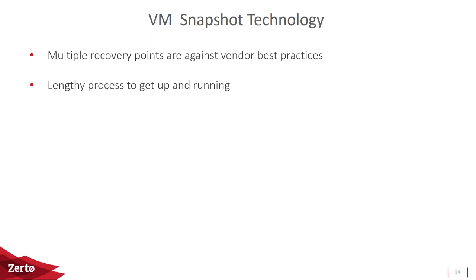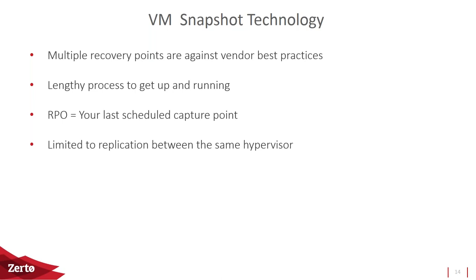VM snapshot solutions can be a lengthy process to configure and maintain — coordinating versions, keeping everything in sync, and managing the upgrade process is more challenging. Your RPO is always your last scheduled capture point. Recovering from eight hours ago because it was before working hours means that's your data loss. Sometimes you can take snapshots morning, noon, and night, but with 24/7 access to systems you have to ask: is there ever truly a downtime window when you can capture snapshots without impacting those VMs?